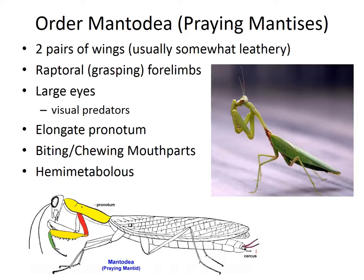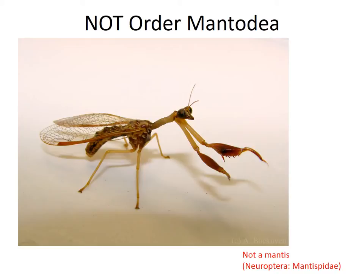They have large eyes — this is because they are, for the most part, visual predators. And their pronotum is more elongate, as you can see in the image here. They, too, have biting and chewing mouthparts, and they, too, are hemimetabolous.